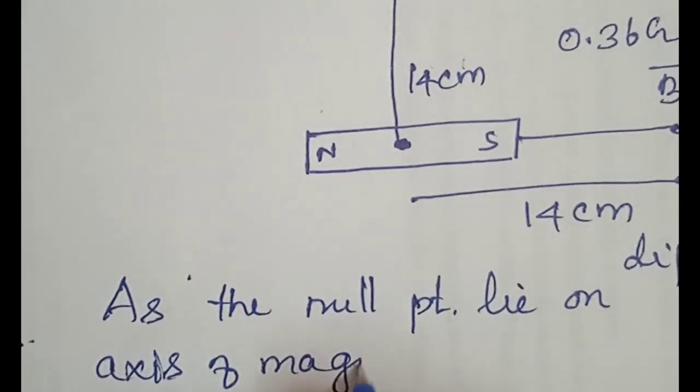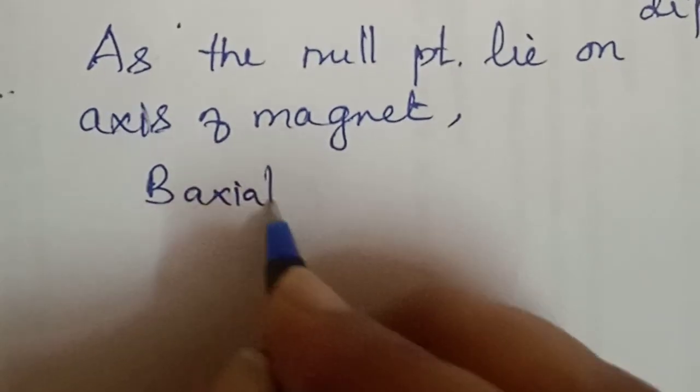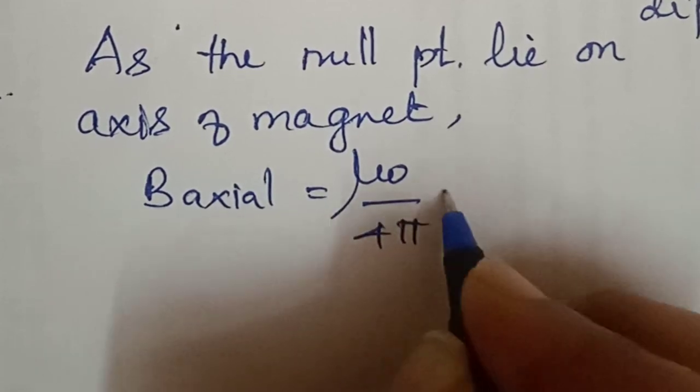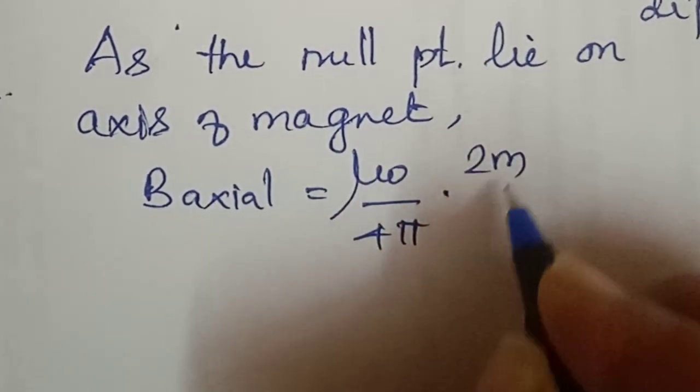As the null point lies on axis of magnet, B axial is equal to mu0 by 4pi into 2m by r cube which is equal to BH.